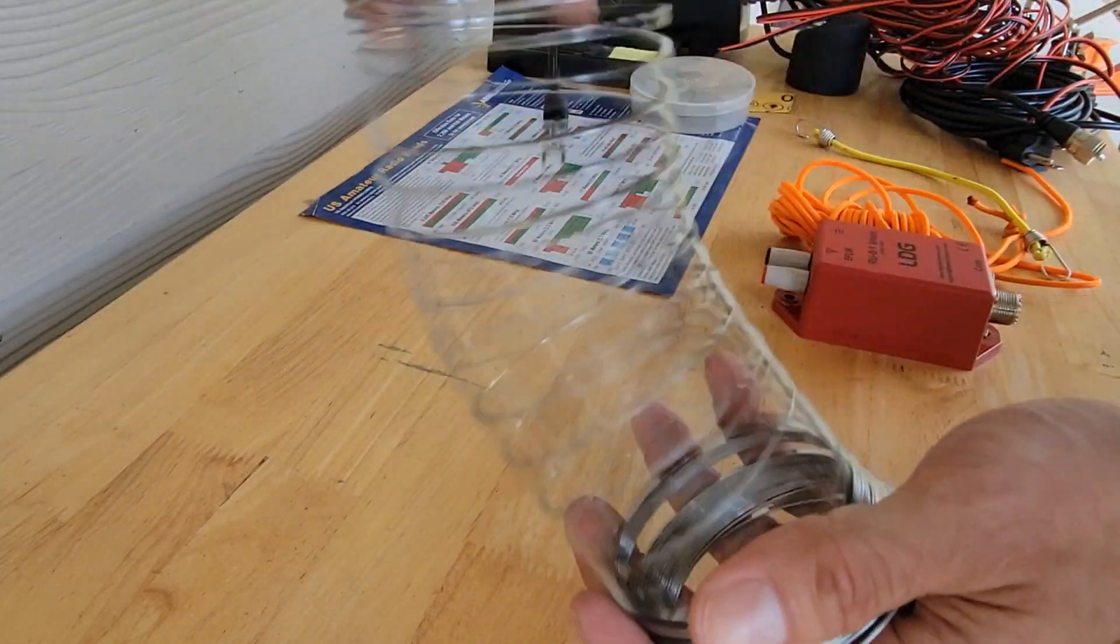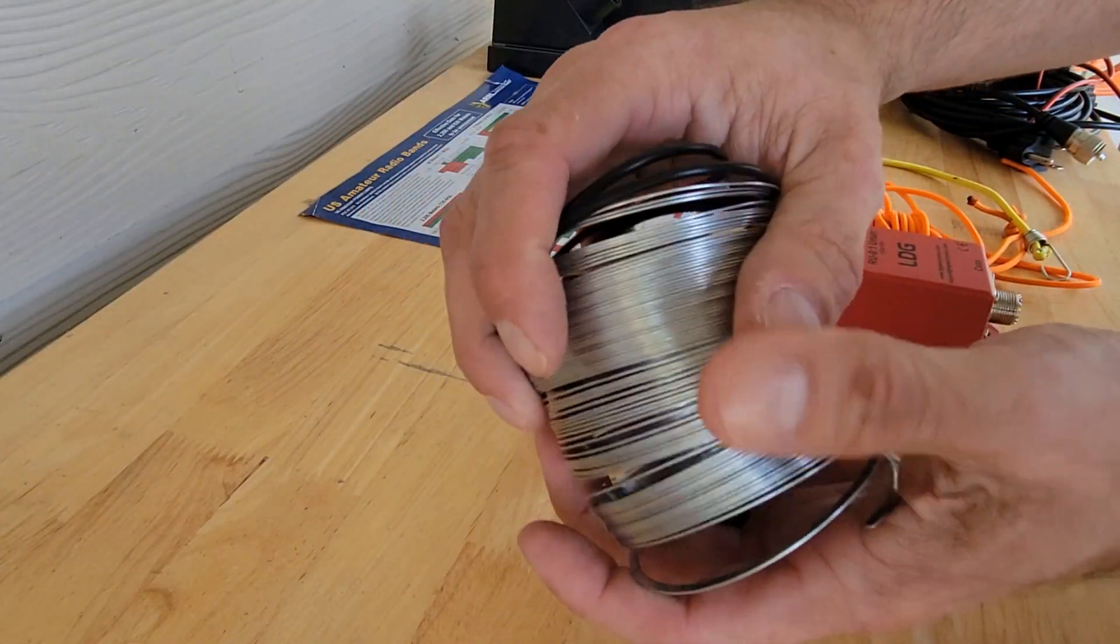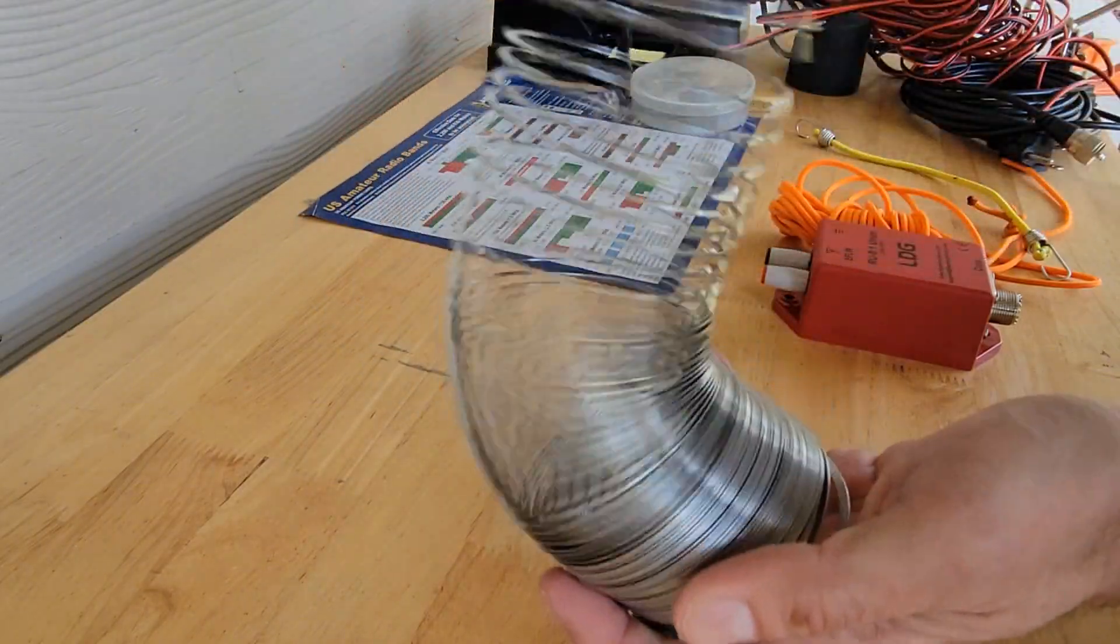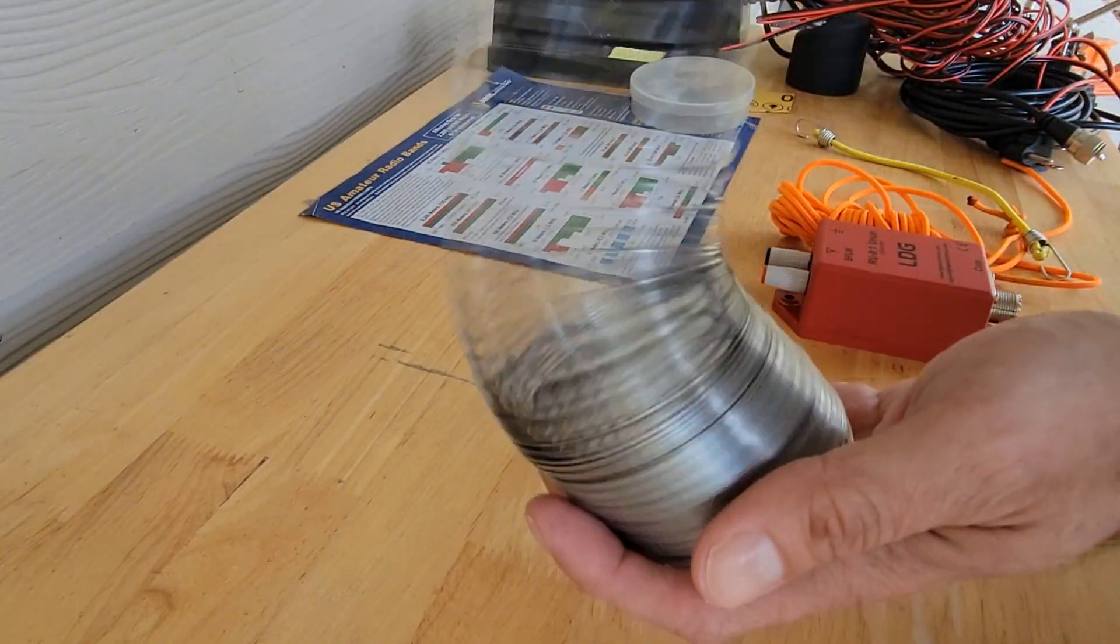When the going gets tough, everyday objects can be useful. Did you know you can make an antenna out of an original slinky? Let's dive into it.